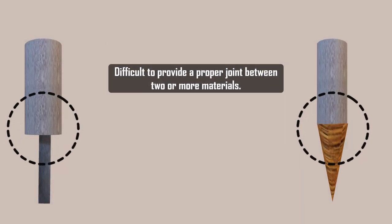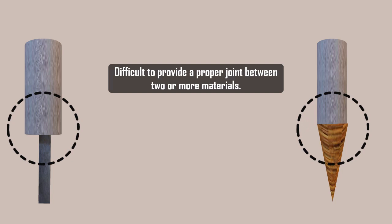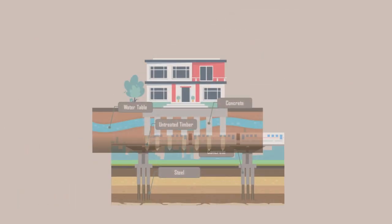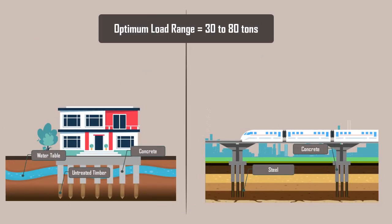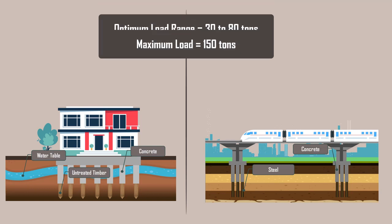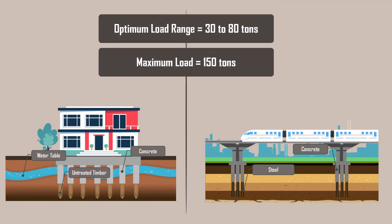Composite piles are used rarely as it is difficult to provide a proper joint between two or more materials. The optimum load range is 30 to 80 tons, with a maximum load limited to about 150 tons.